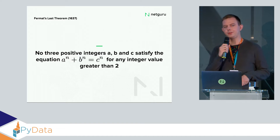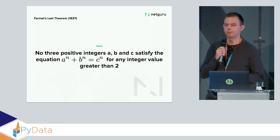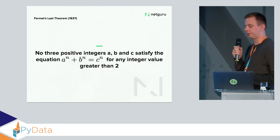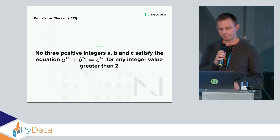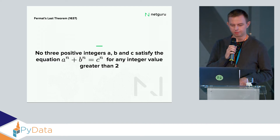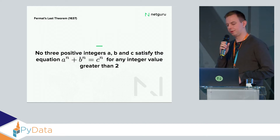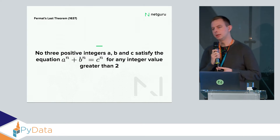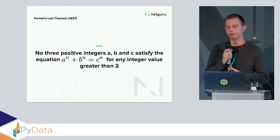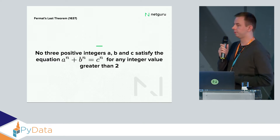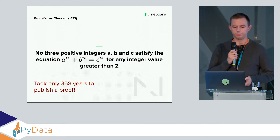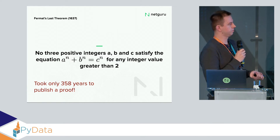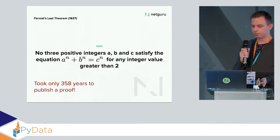But this problem doesn't only exist now. Some of you might know Fermat's Last Theorem — the theorem that no three positive integers a, b, and c satisfy the equation a^n + b^n = c^n for any integer value of n greater than 2. Fermat apparently wrote in the margin that the proof is surprising and interesting but there is not enough space on the margin to fit the proof. It took only 358 years to publish the proof. So this problem existed much earlier in science.